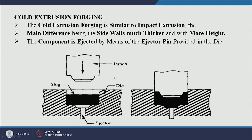Cold extrusion forging is used for making thick walled components where the length and size of the component are limited, and it involves a little bit of flow of metal in the backward direction.